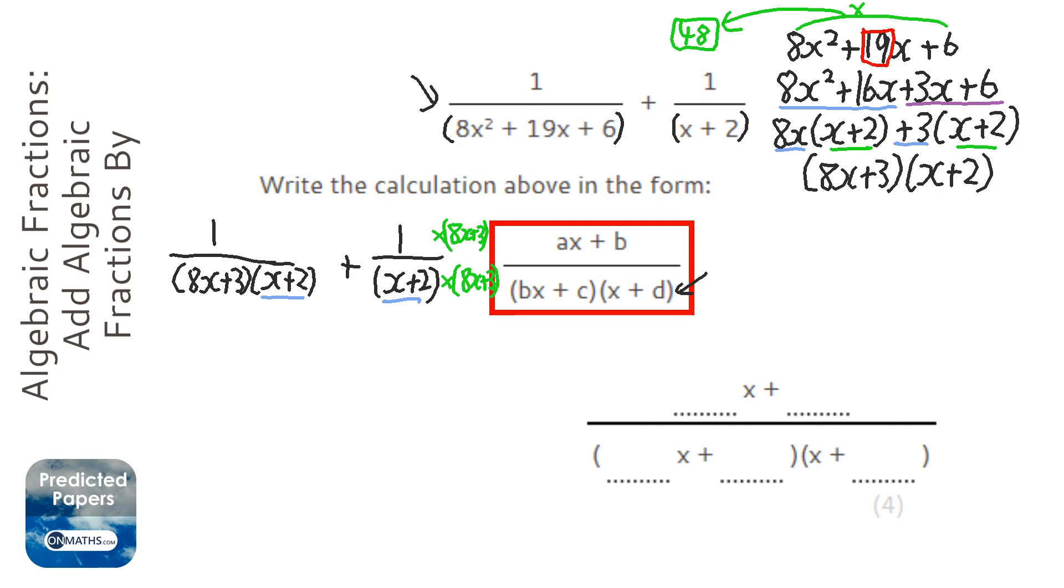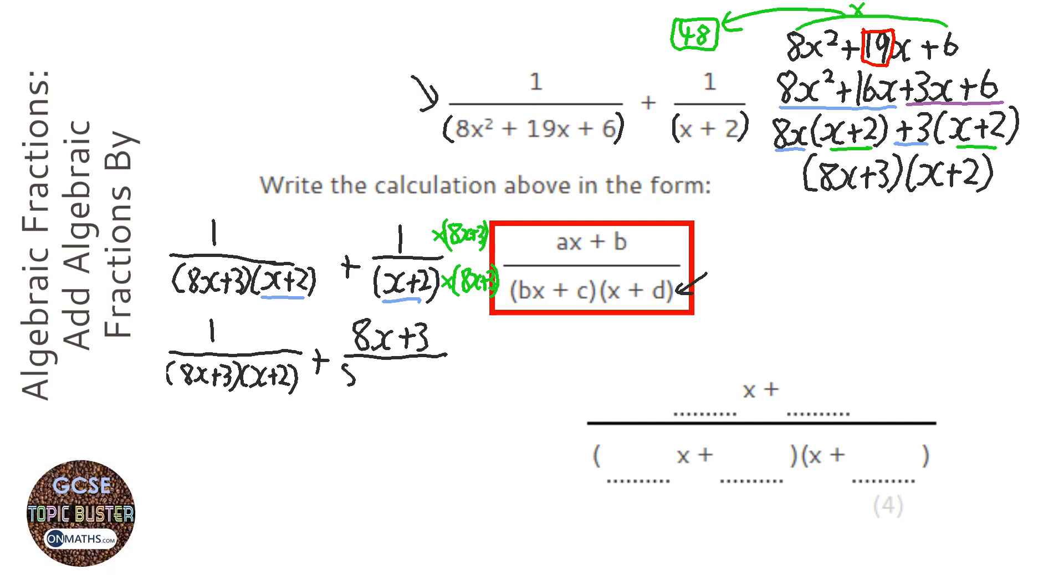Right. So I'll rewrite that just to make sure my working out is really clear. So the top becomes 8x plus 3. And the bottom actually is the same as the other side.